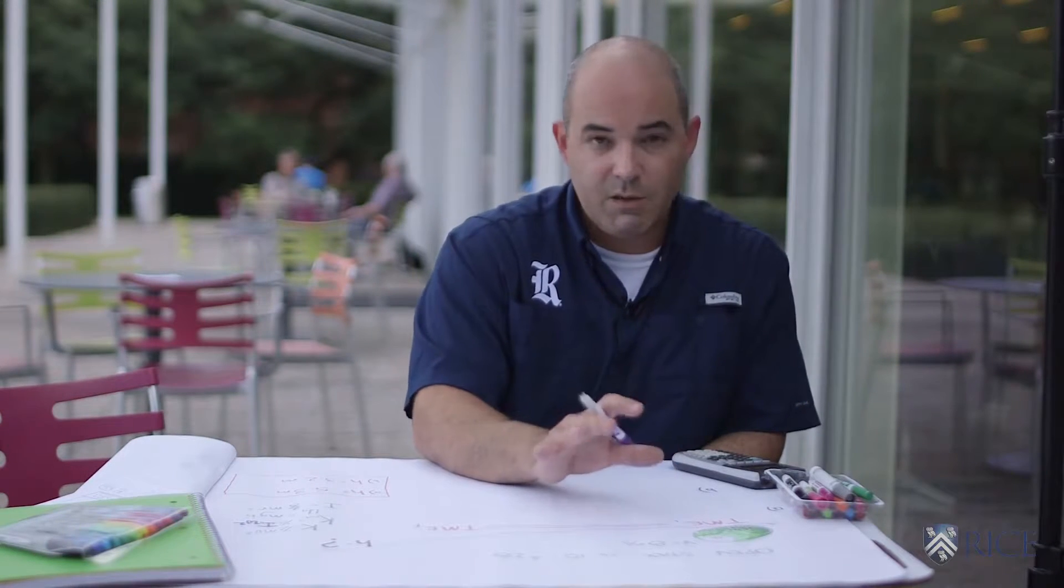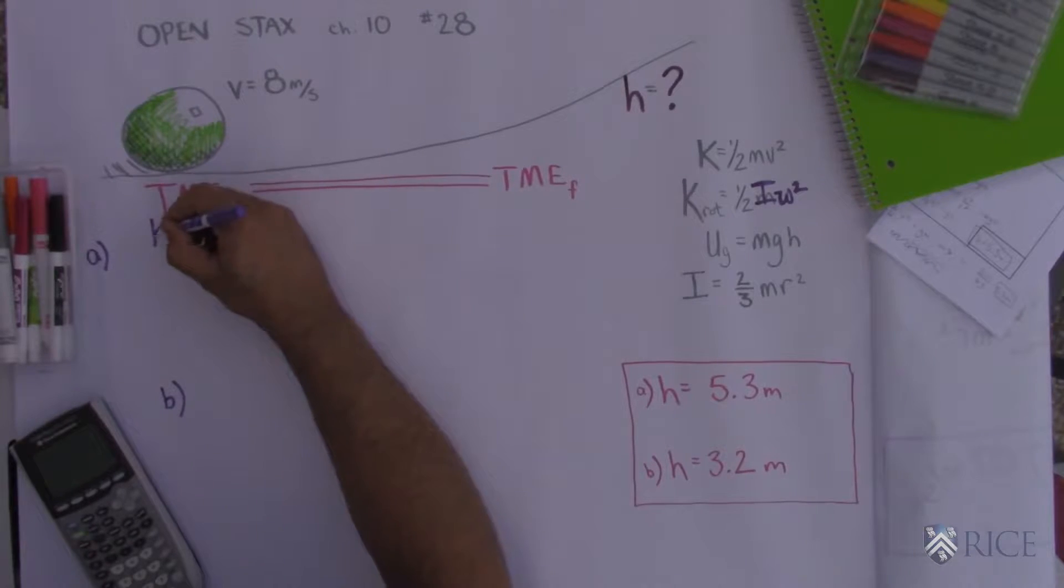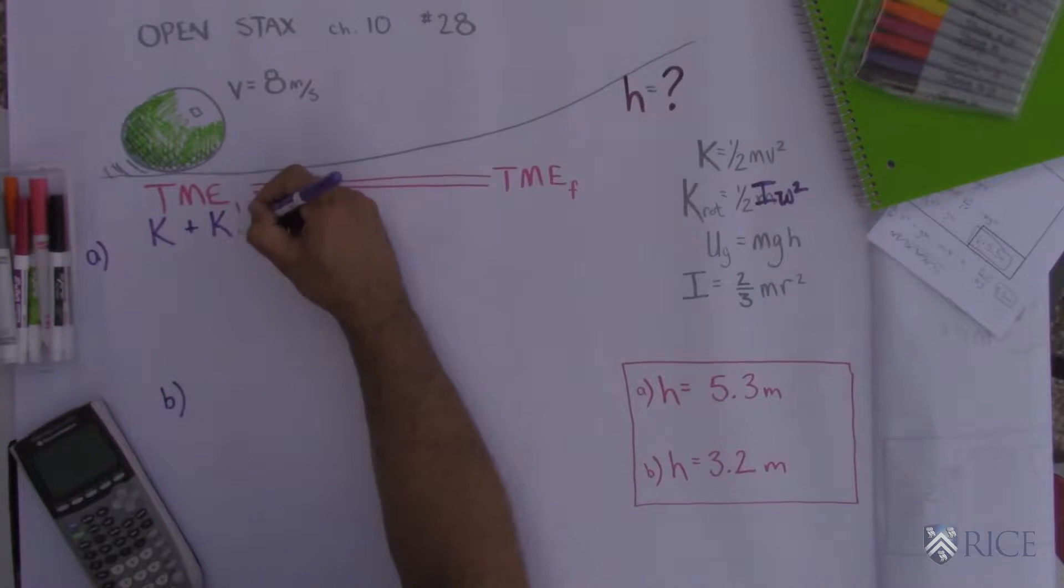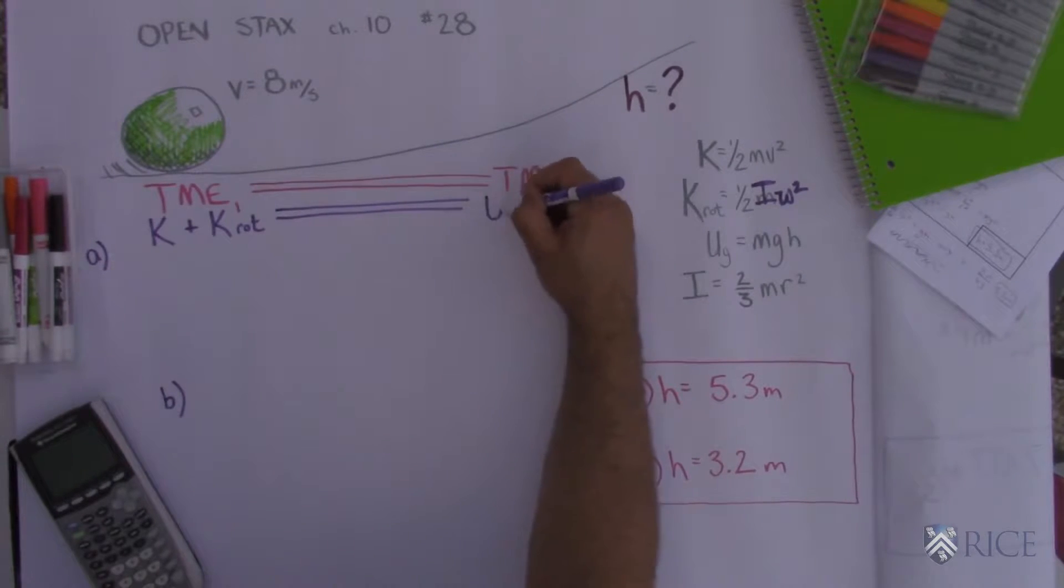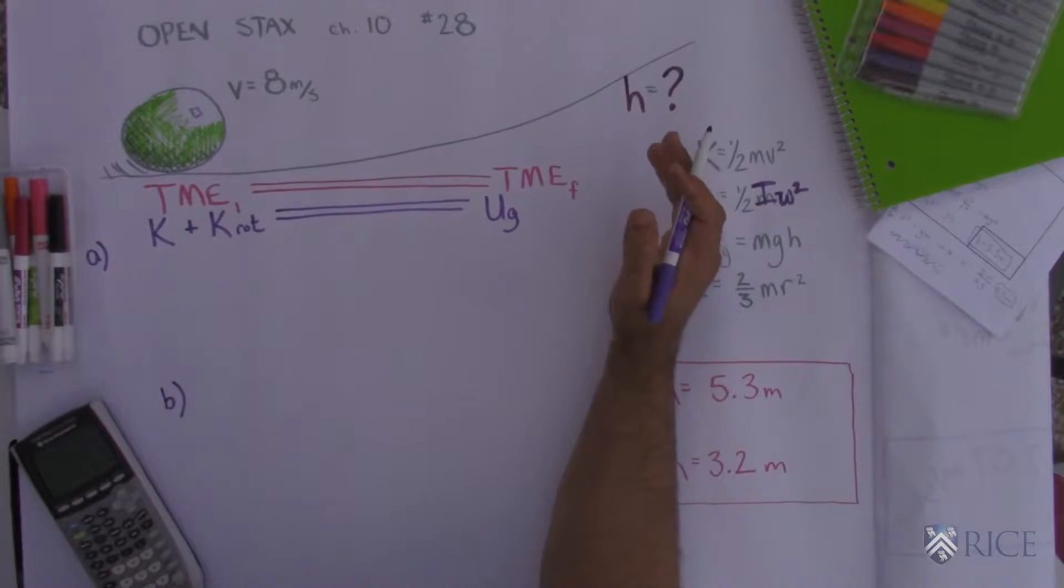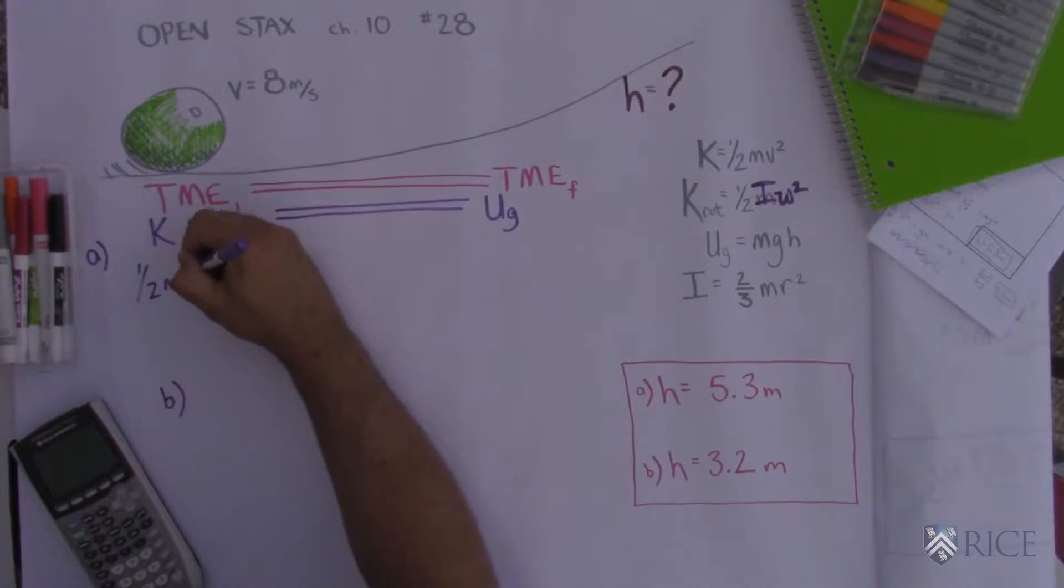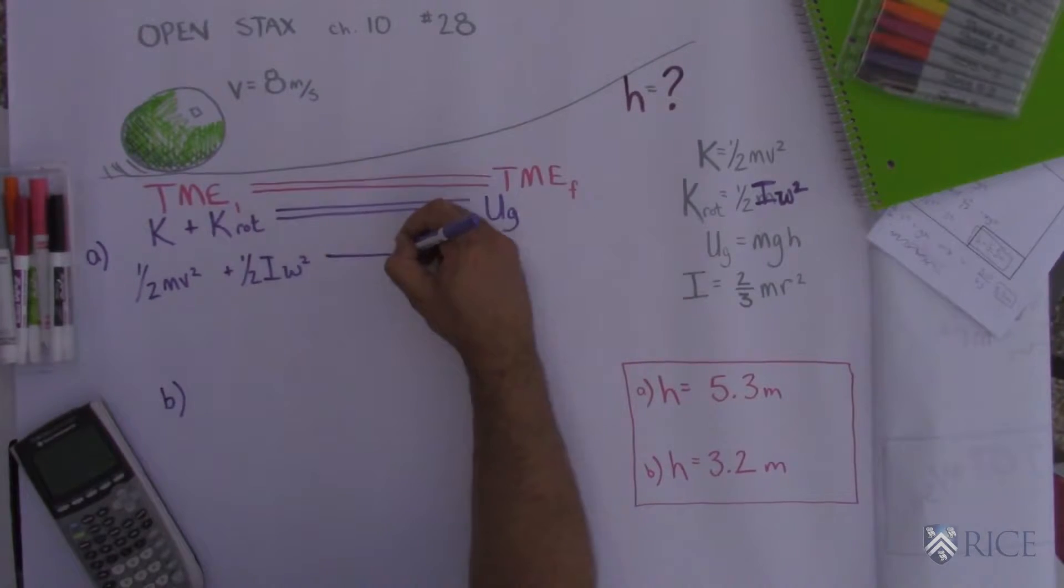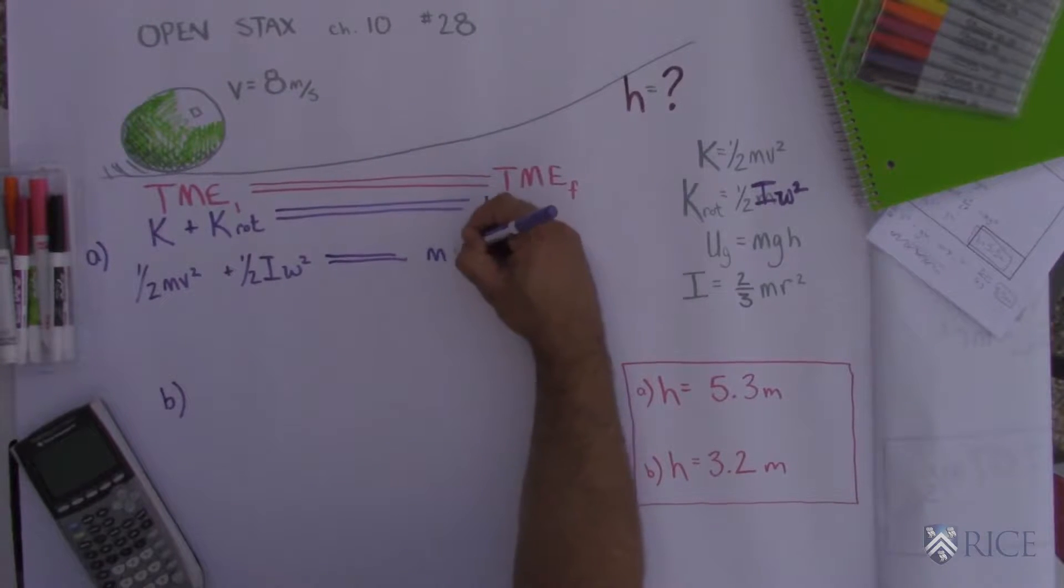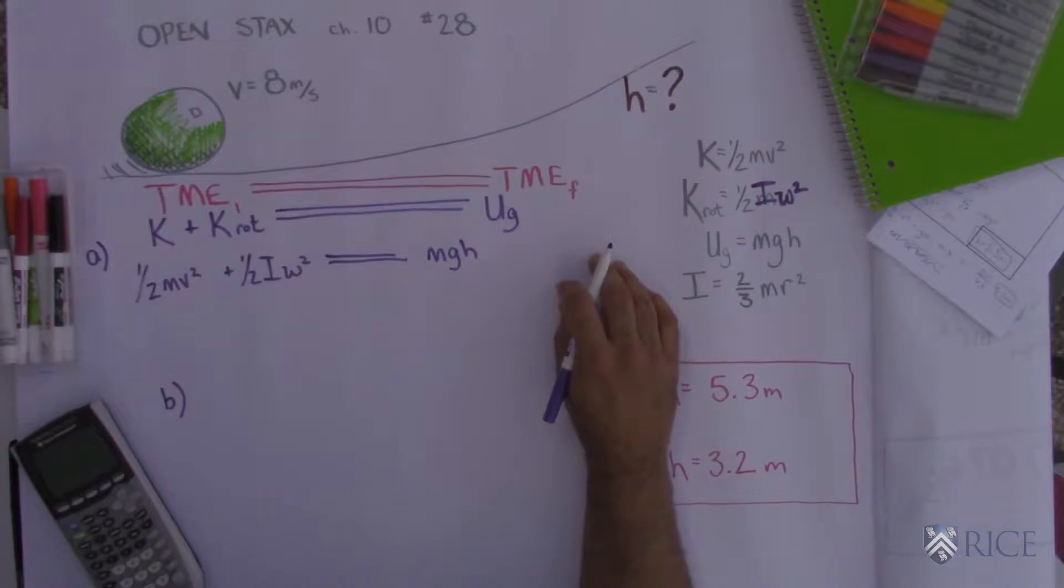So initially it's got two kinds of energy. It's got translational kinetic energy and rotational kinetic energy, and all that energy is going to get converted into gravitational potential energy. So mathematically it looks like this: one-half mv squared for my kinetic energy plus one-half I omega squared for my rotational kinetic energy is equal to mgh for my gravitational potential energy.